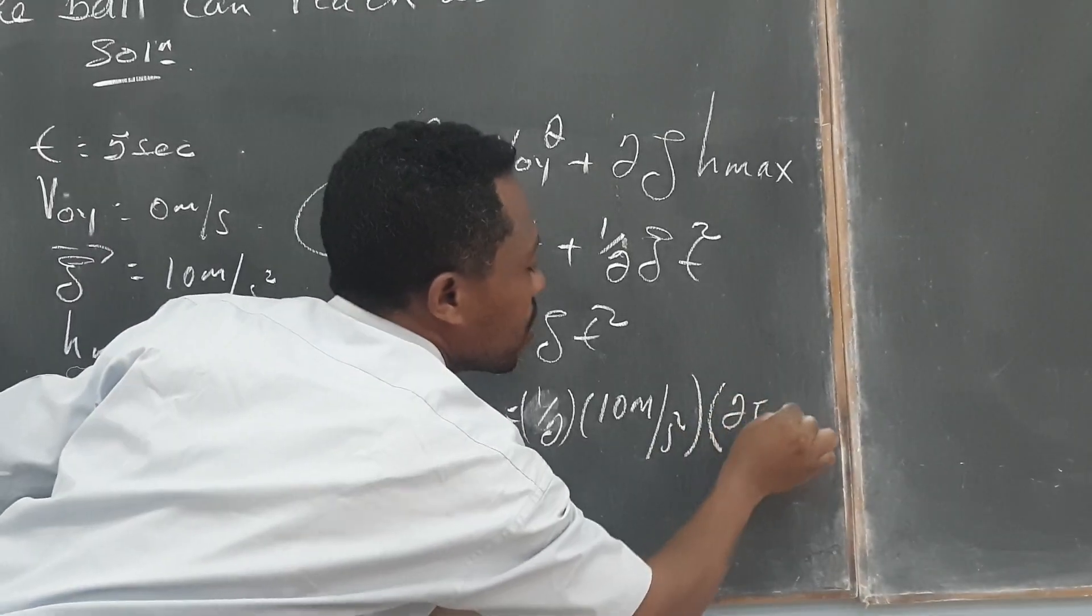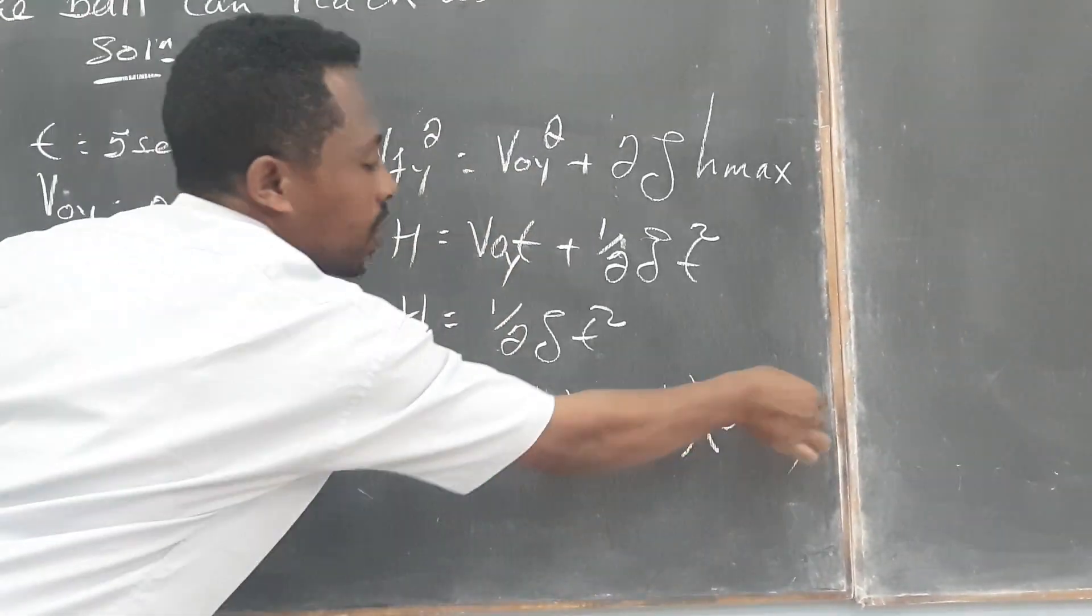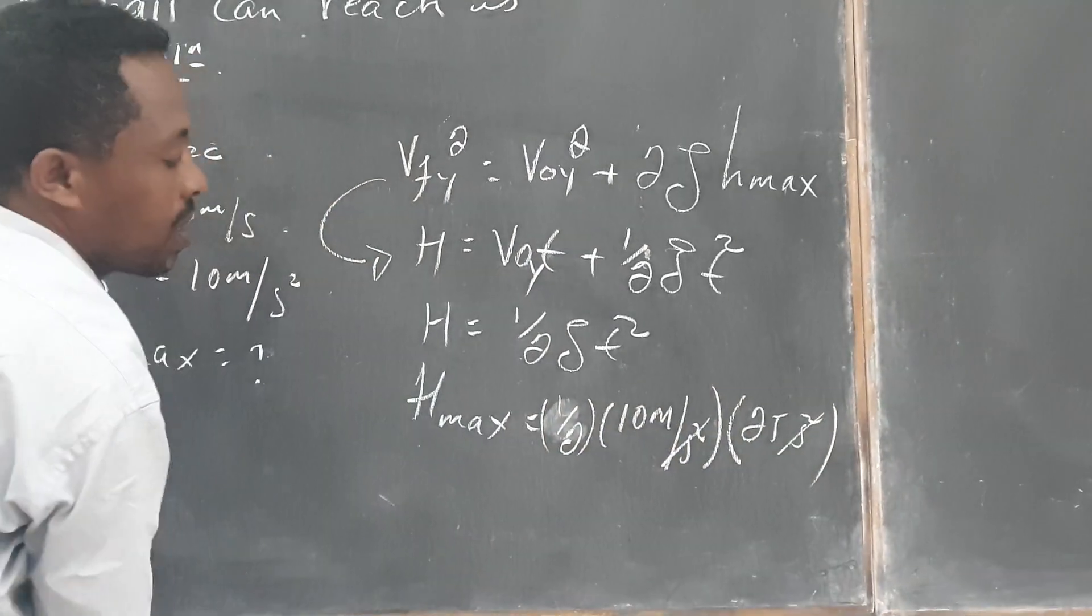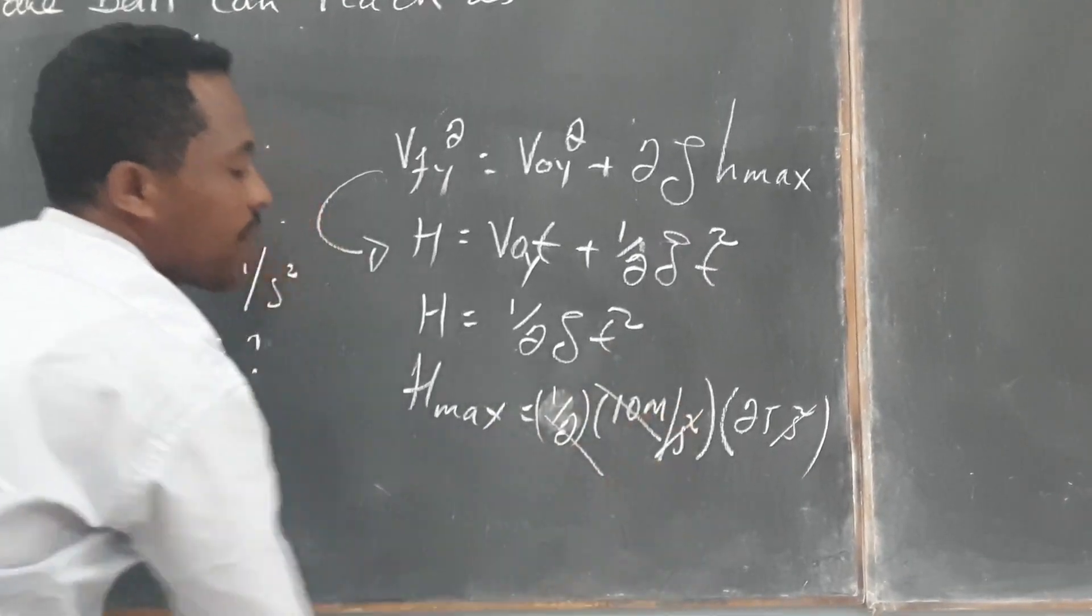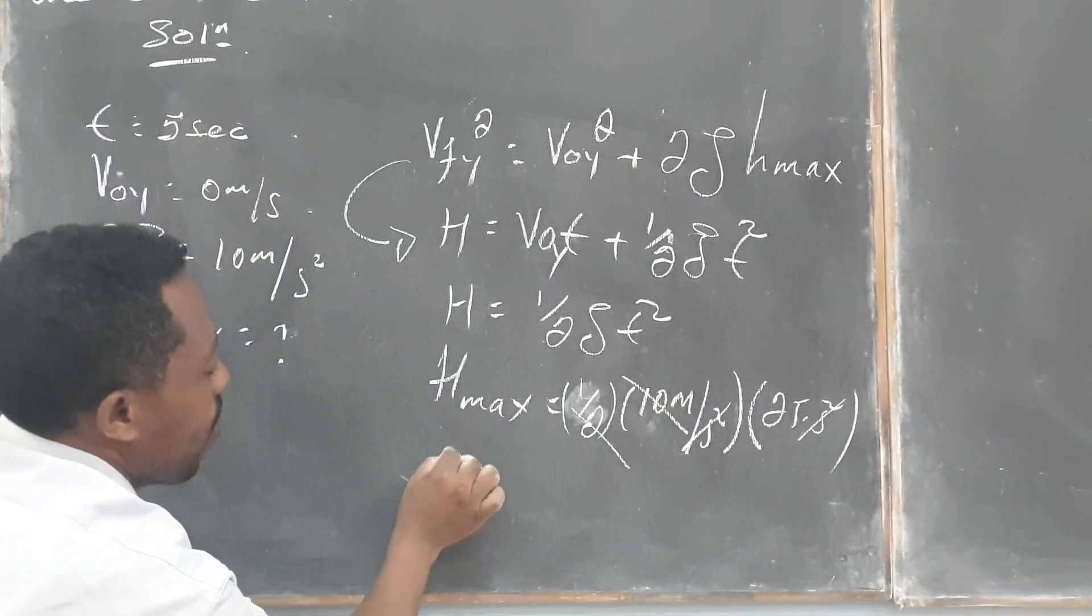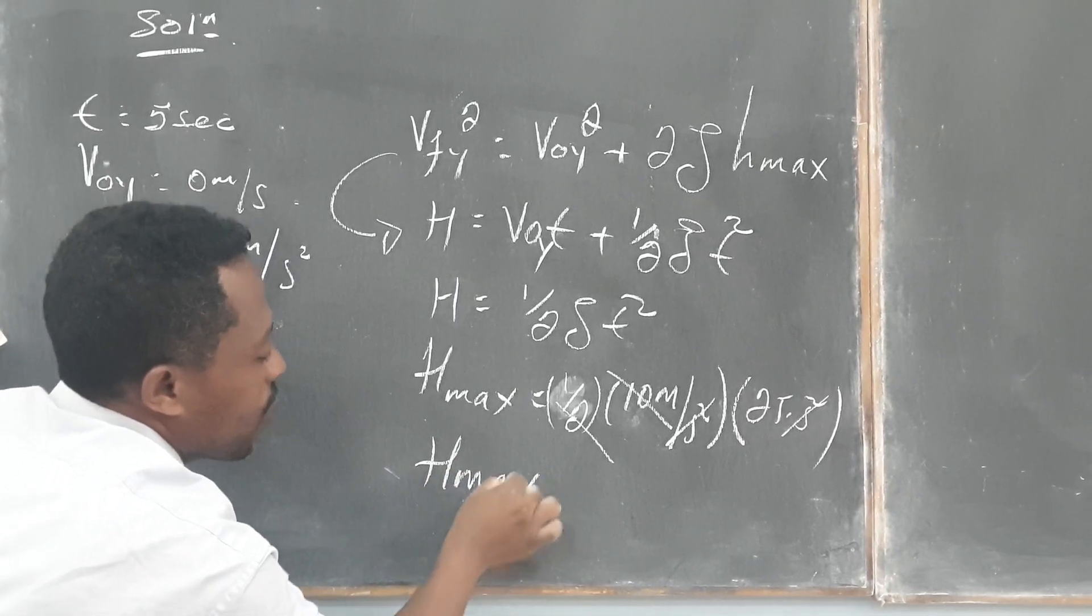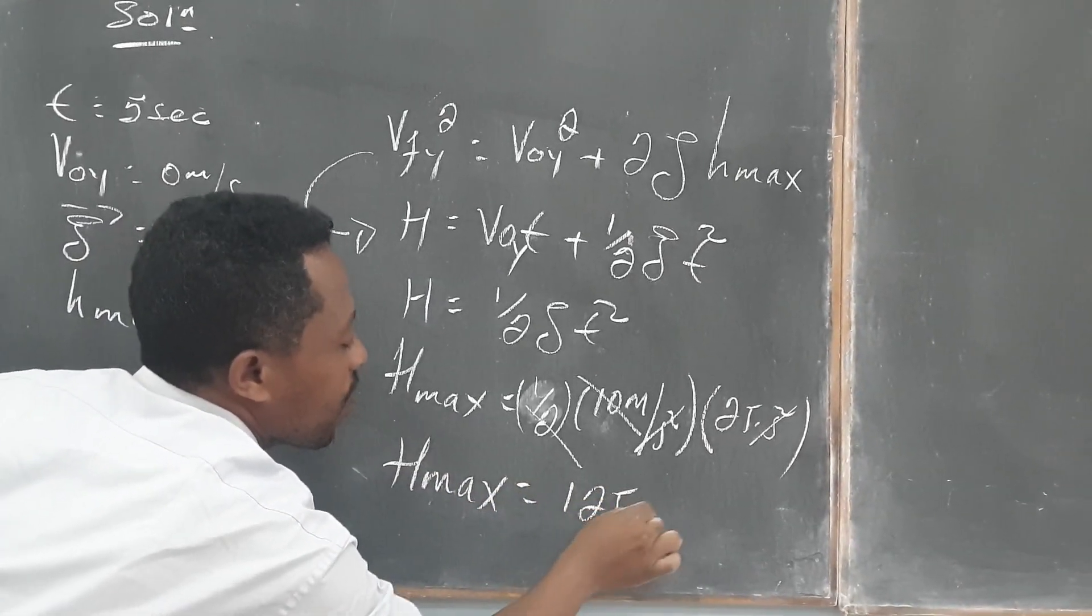Just square it, 25. Square of second. And then square of second by square of second. And then 1 over 2, 5 times 25. Now H max becomes 125 meters.